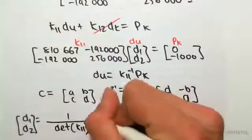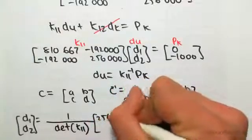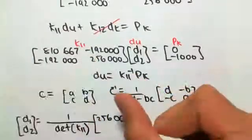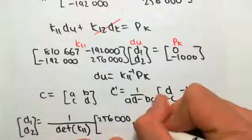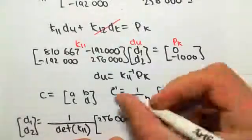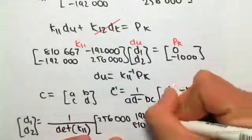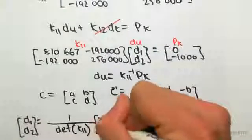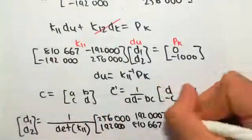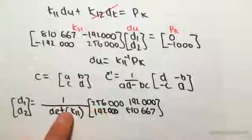The determinant of k11 is simply that by that minus that by that, outside of swapping them around. You would get 256,000, 182,000, swapping these, so the 810,667, 191,000, putting minus signs in front of them. They're already minus, so you're actually gonna get positives.